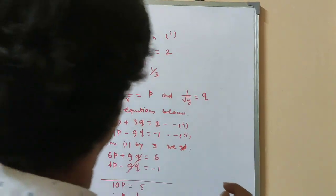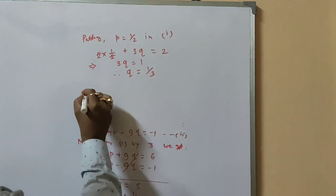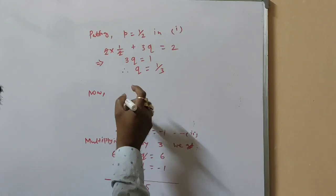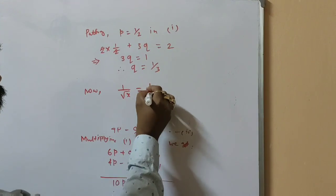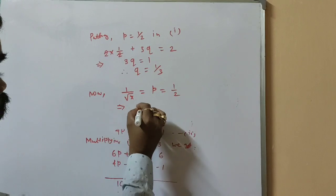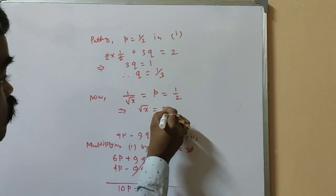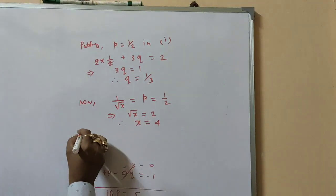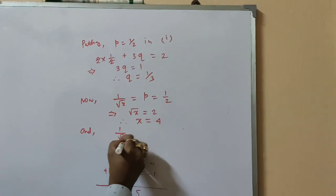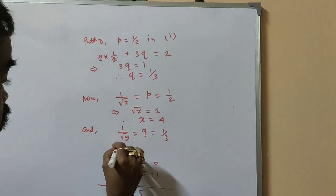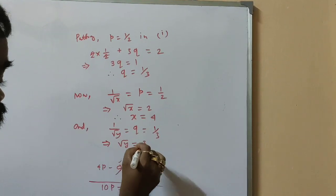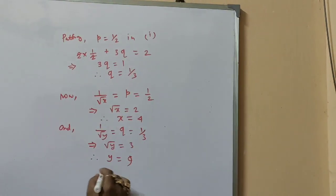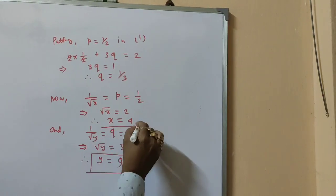We need to find x and y. Since p equal to 1 by root x equal to 1 by 2, root x equal to 2, squaring both sides gives x equal to 4. And since q equal to 1 by root y equal to 1 by 3, root y equal to 3, squaring both sides gives y equal to 9. Hence the solutions are x equal to 4 and y equal to 9.